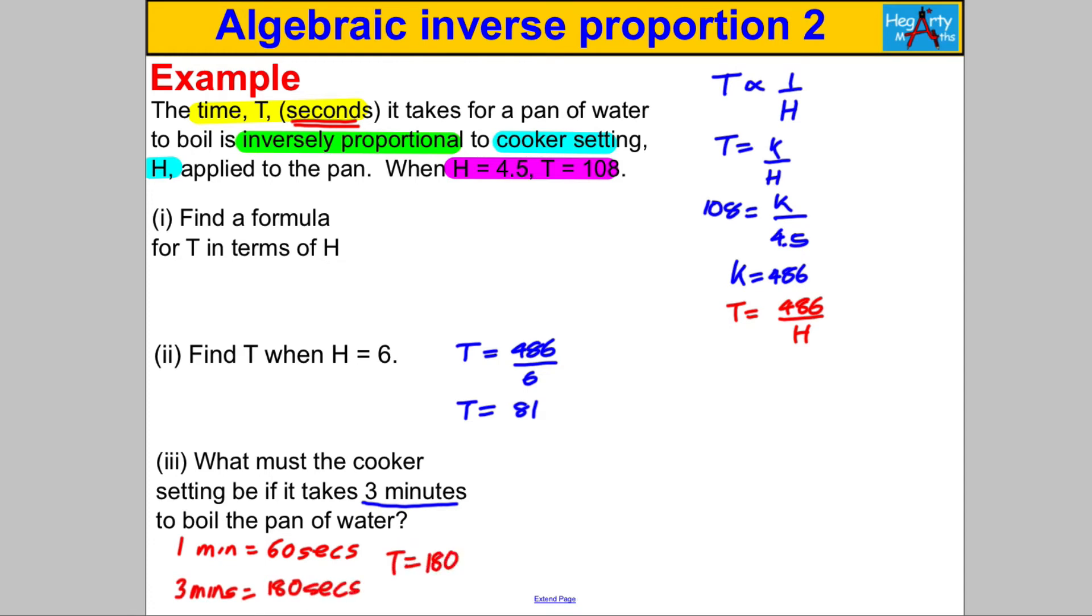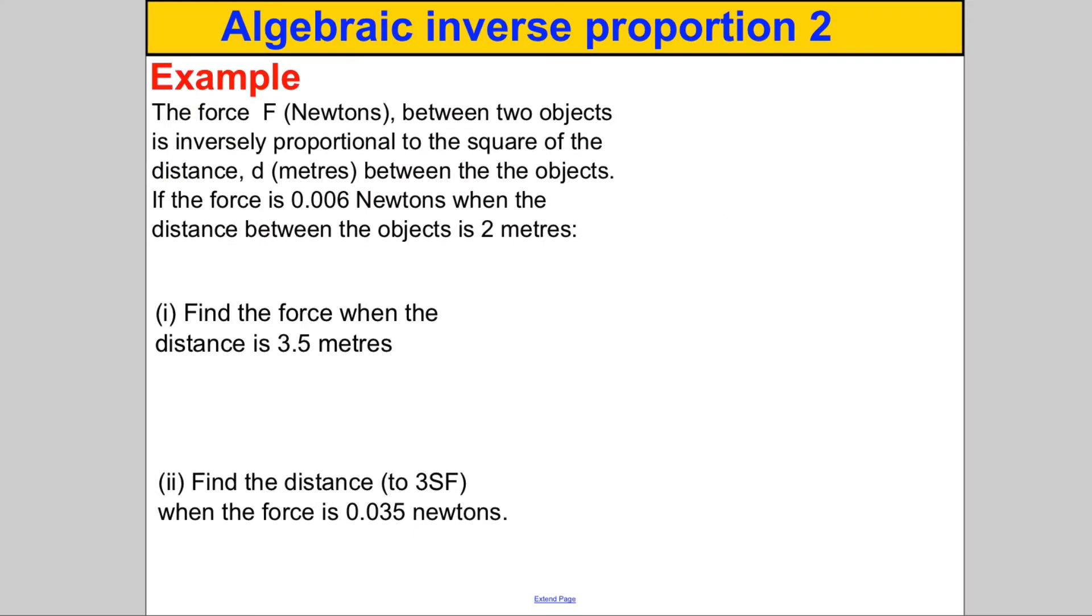All you've got to do is substitute in 180 for T in this formula. So 180 would therefore be 486 divided by H, and rearranging, H is therefore equal to 486 divided by 180. If you do 486 divided by 180, you get that H, the cooker setting, is 2.7. And we're done.